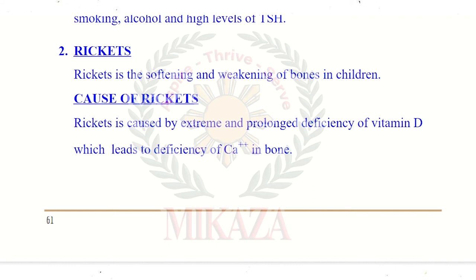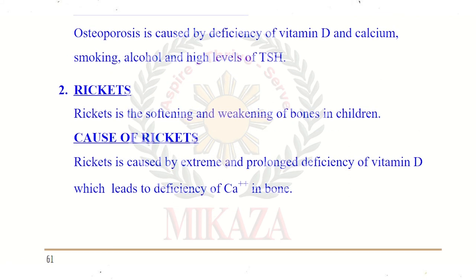Number two: Rickets. Rickets is the softening and weakening of bones in children. When bones in children become soft or weak, that condition is known as rickets. Causes of rickets: rickets is caused by extreme and prolonged deficiency of vitamin D, which leads to deficiency of calcium in the bones. When vitamin D is reduced in the body, calcium absorption is also reduced, causing rickets.